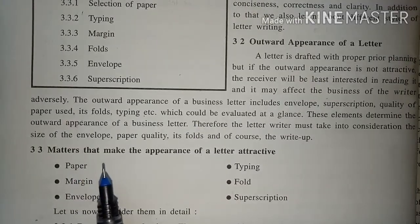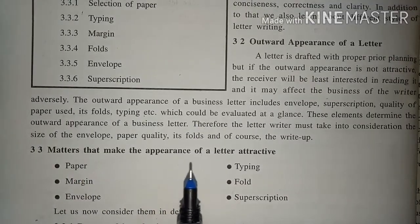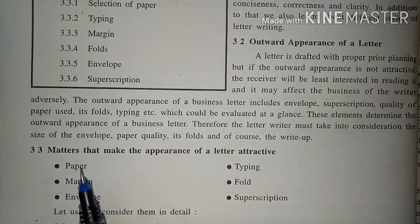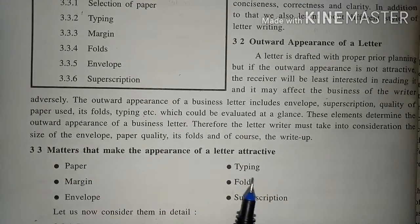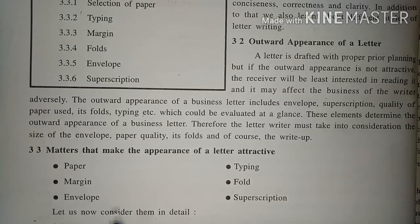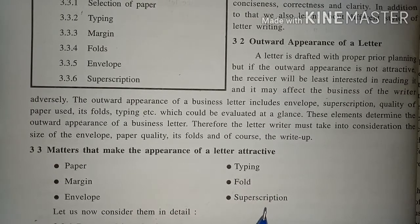Matters that make the appearance of a letter attractive: paper, typing, margin, fold, envelope, and superscription.